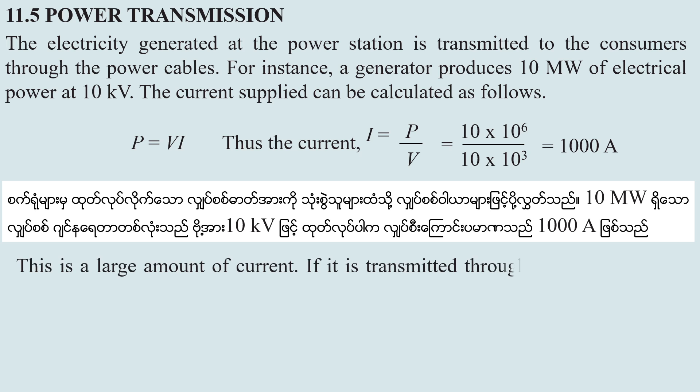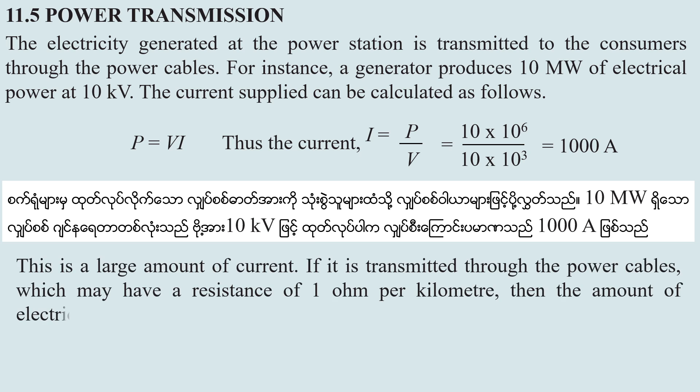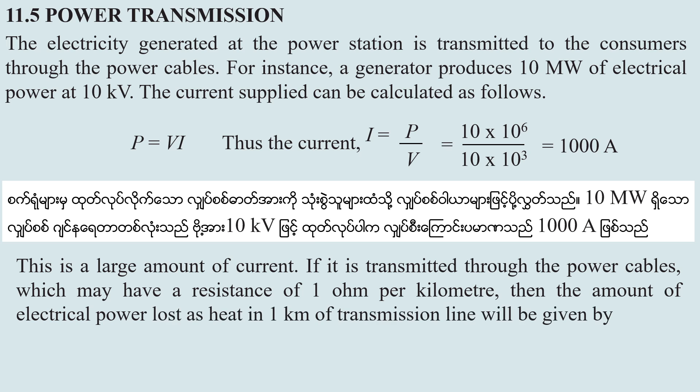This is a large amount of current. If it is transmitted through the power cables, which may have a resistance of one ohm per kilometer, then the amount of electrical power lost as heat in one kilometer of transmission line will be given by the formula.